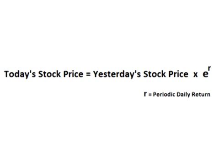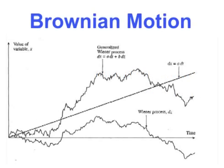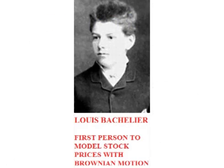A Monte Carlo simulator generates theoretical future r values. Because the rate of return on an asset is a random number, to model the movement and determine possible future values, we must use a formula that models random movements. This was first done about a hundred years ago by a man named Louis Bastier, who first applied Brownian motion — a formula used to model random movements in physics — to the movement of the price of an asset.